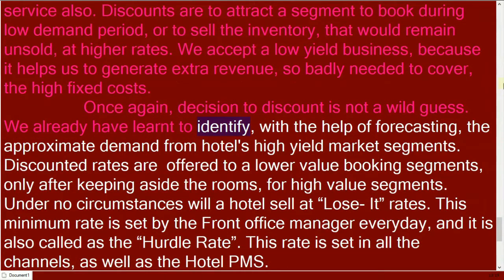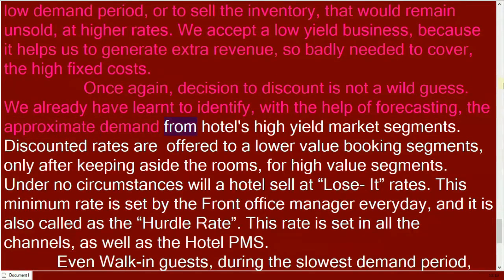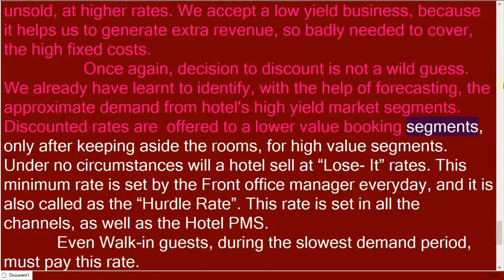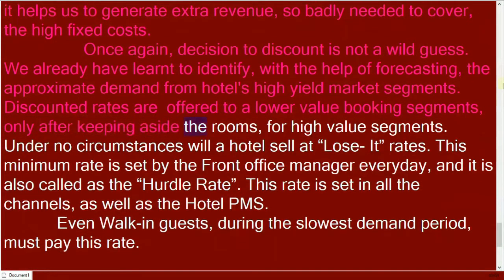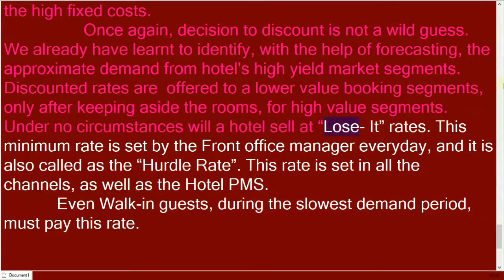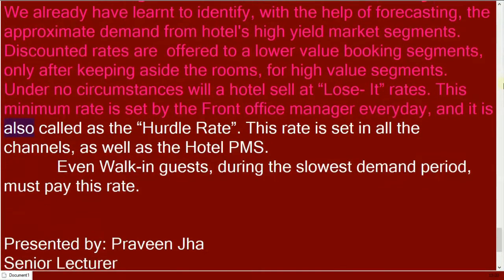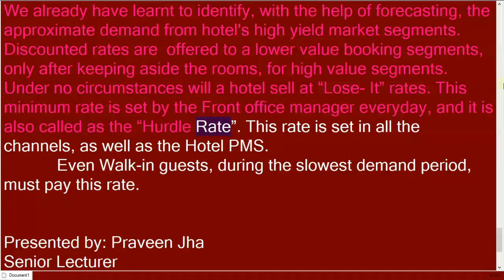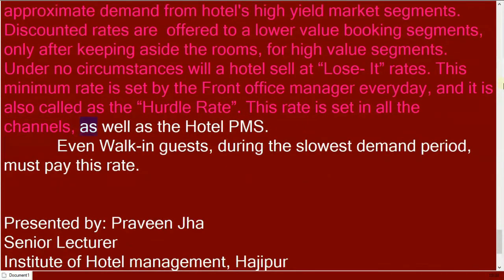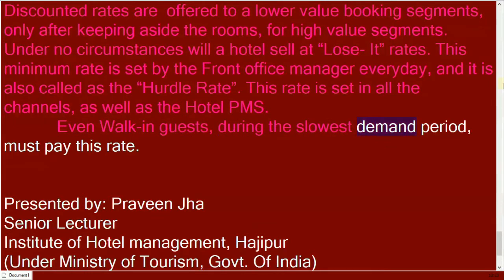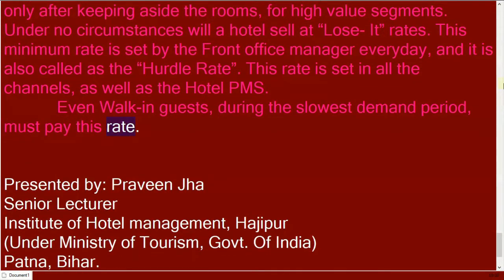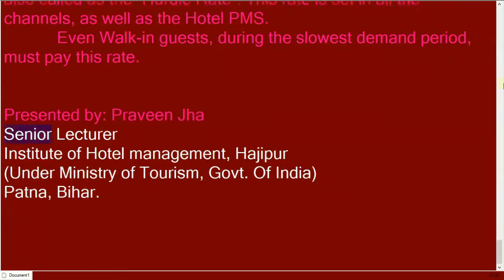The decision to discount is not a wild guess. We have already learned to identify, with the help of forecasting, the approximate demand from a hotel's high-yield market segments. Discounted rates are offered to lower-value booking segments only after keeping aside the rooms for high-value segments. Under no circumstances will a hotel sell at loss-making rates. This minimum rate is set by the front office manager every day and is also called the hurdle rate. This rate is set across all channels as well as the hotel PMS — even walk-in guests during the slowest demand period must pay this rate.